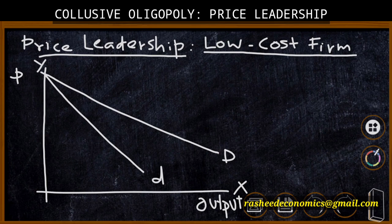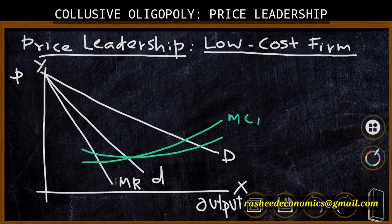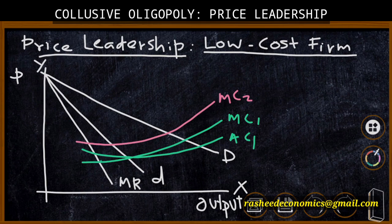Corresponding to the individual demand curve there is an MR curve. Since Firm A has a cost advantage, its marginal cost lies below the marginal cost and average cost of Firm B. MC1 is the marginal cost of Firm A with its corresponding average cost AC1, and MC2 is the marginal cost of Firm B with its corresponding average cost AC2.